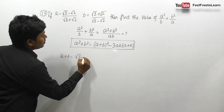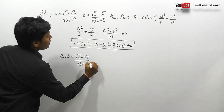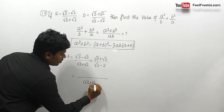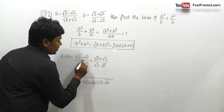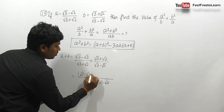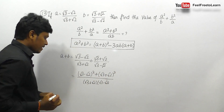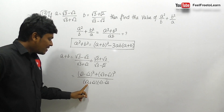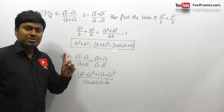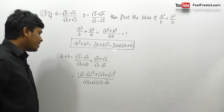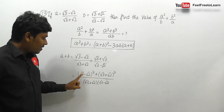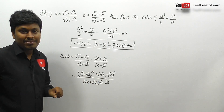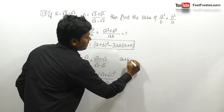Finding a+b: a+b = (√3-√2)/(√3+√2) + (√3+√2)/(√3-√2). The denominator is (√3+√2)(√3-√2) = 3 - 2 = 1. The numerator is (√3-√2)² + (√3+√2)² = 5 + 5 = 10. So a+b = 10.